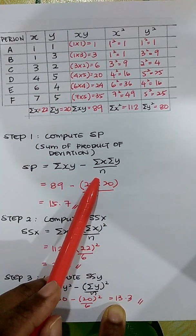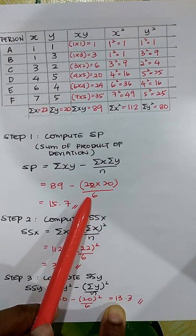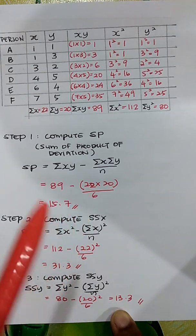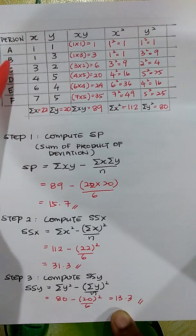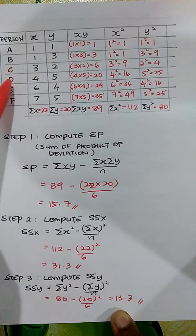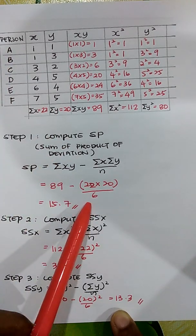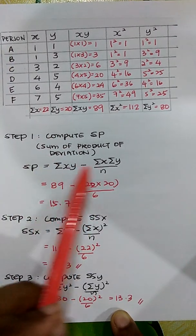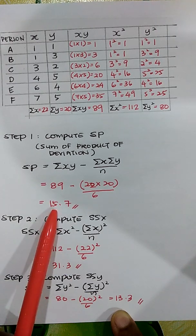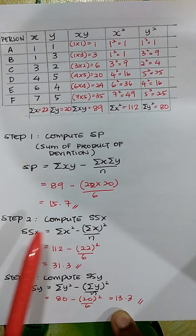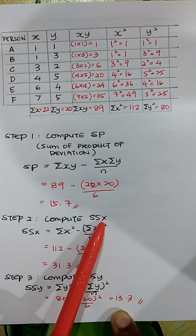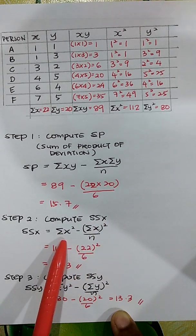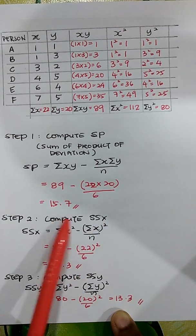Substituting into the SP formula: SP = 89 − (22 × 20)/6. With n = 6 participants, when you solve this you get SP = 15.7.